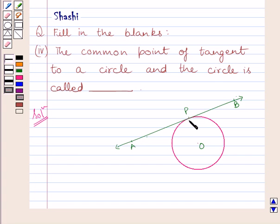Now, in this case, P is the point of contact. Since the tangent is touching the circle at point P, so P is the point of contact.